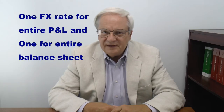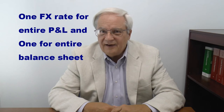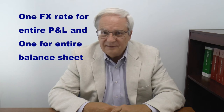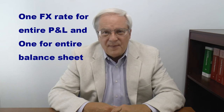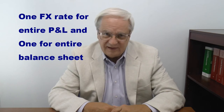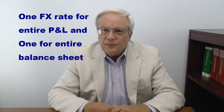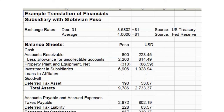By contrast, aggregates like net profit or loss are translated at a rate for the period — this translation happens at a single rate for the entire aggregate. Balance sheets are also translated at a single rate: the rate for the date of the balance sheet.